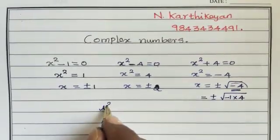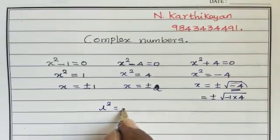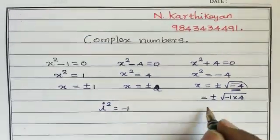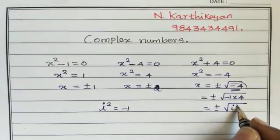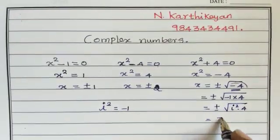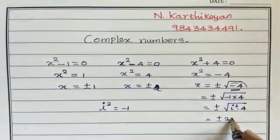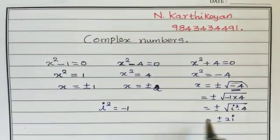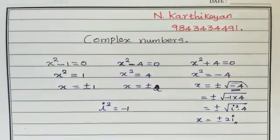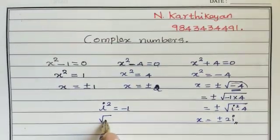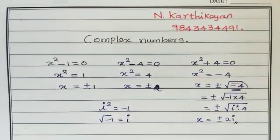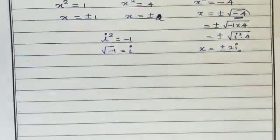We introduce i² = -1. So √(-4) = √(i² × 4) = ±2i. Here, i is called the imaginary unit, where i² = -1, and therefore √(-1) = i.